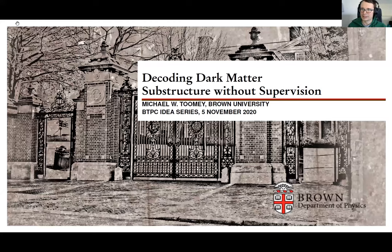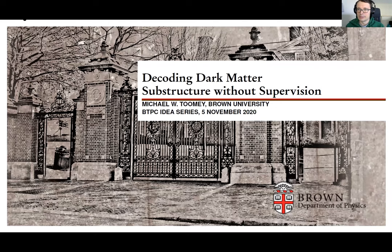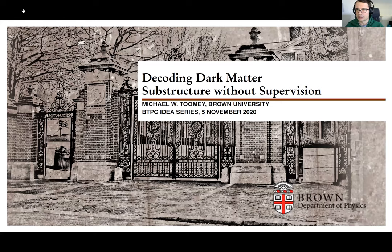Okay everyone, welcome. Today I have the pleasure of introducing Michael Toomey. He's a graduate student here at Brown University. He works in Professor Stefan Alexander's research lab. Michael is interested in high energy physics, astrophysics, and cosmology, and in particular the intersection between questions about the universe and methods of machine learning and computational science. So today he's going to be talking about some ways that we can use unsupervised learning to look into how dark matter exists in the universe. So with that Michael, take it away.